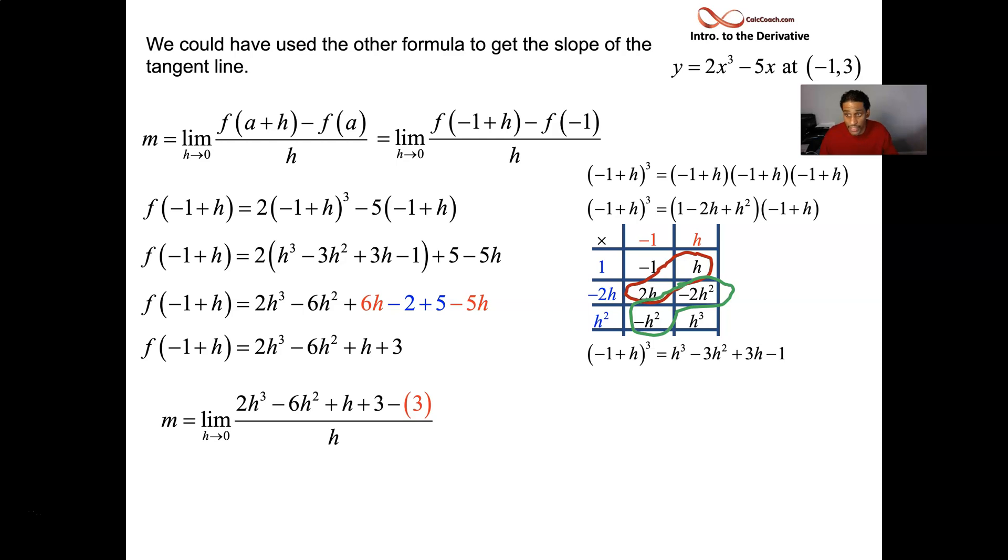The goal is to cancel the h from the denominator. And now that we could factor it out, we can cancel, allowing us to automatically be able just to plug in h equals 0, giving us the same value of 1.